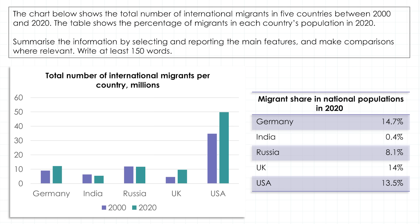And we have 5 countries: Germany, India, Russia, the UK and the USA. For each country we see the number of migrants in 2000 and 2020. And the table shows the migrant share in national populations in 2020 — so it shows the proportion of migrants in the population of each country.